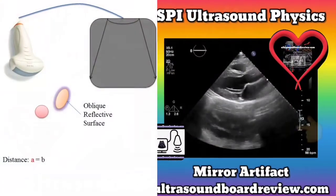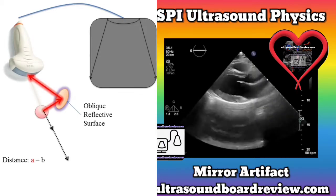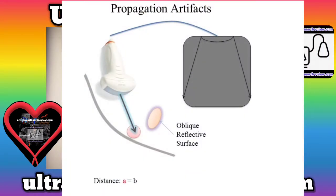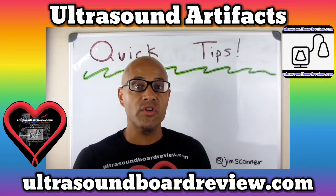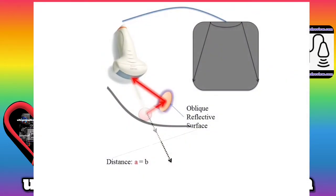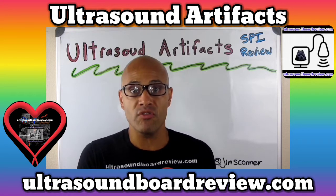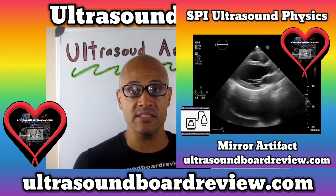A mirror imaging artifact occurs when a sound wave bounces off an oblique angle like the diaphragm and strikes a highly reflective structure before returning back to the transducer. A pulse reflects off the diaphragm and strikes another highly reflective structure, causing a portion of that beam to be reflected back to the transducer and a portion to be transmitted. The transmitted portion goes back to the diaphragm and then back to the transducer. The machine assumes a one-way travel time for every pulse sent into the body, but in this instance the pulse had to travel longer than usual, so the artifact is displaced deeper into the tissue below the diaphragm. Sometimes there's no way to avoid this other than changing your transducer angle. The problem is that an inexperienced sonographer could mistake this for a pleural effusion.